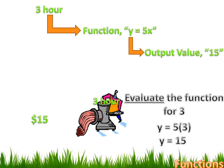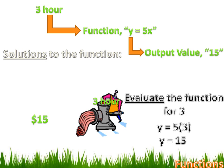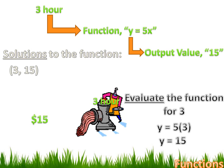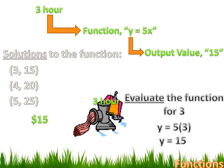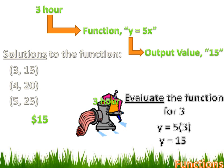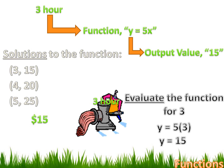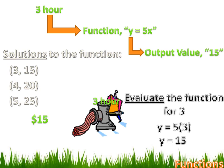We've got an x value of 3 and a y value of 15, which is a solution to the function y equals 5x. But there are other solutions: 4 and 20 works, 5 and 25 works — all those are solutions to y equals 5x. However, 3 and 10 wouldn't work, because if we substituted 3 for x in y equals 5x, we don't get 10.